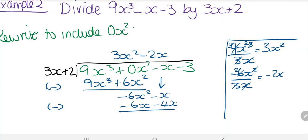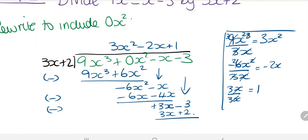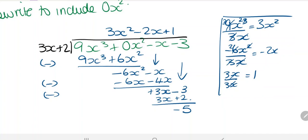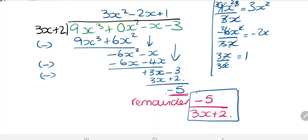Minus x plus 4x is going to be plus 3x. We bring the minus 3 down, so 3x divided by 3x equals 1, giving us plus 1. Multiplying back: 1 times 3x and 1 times 2. Subtracting, we get minus 3 minus 2 equals minus 5. So our remainder is minus 5, which is written as a fraction over 3x plus 2.